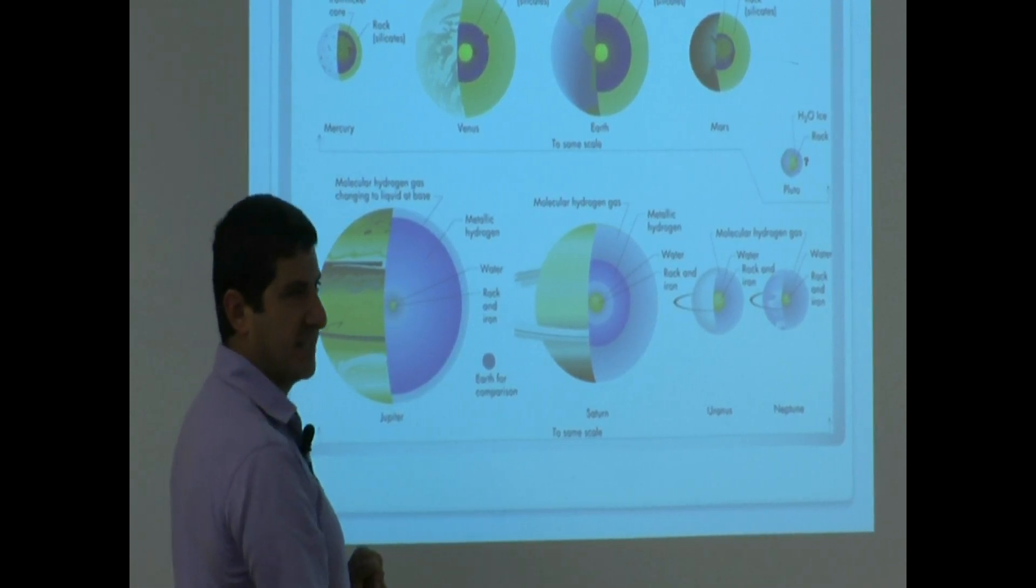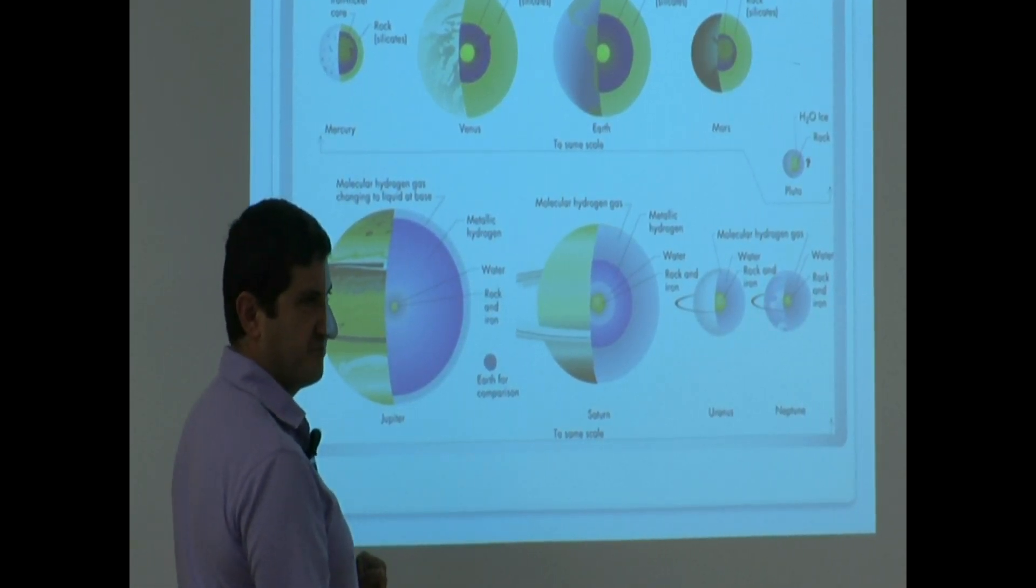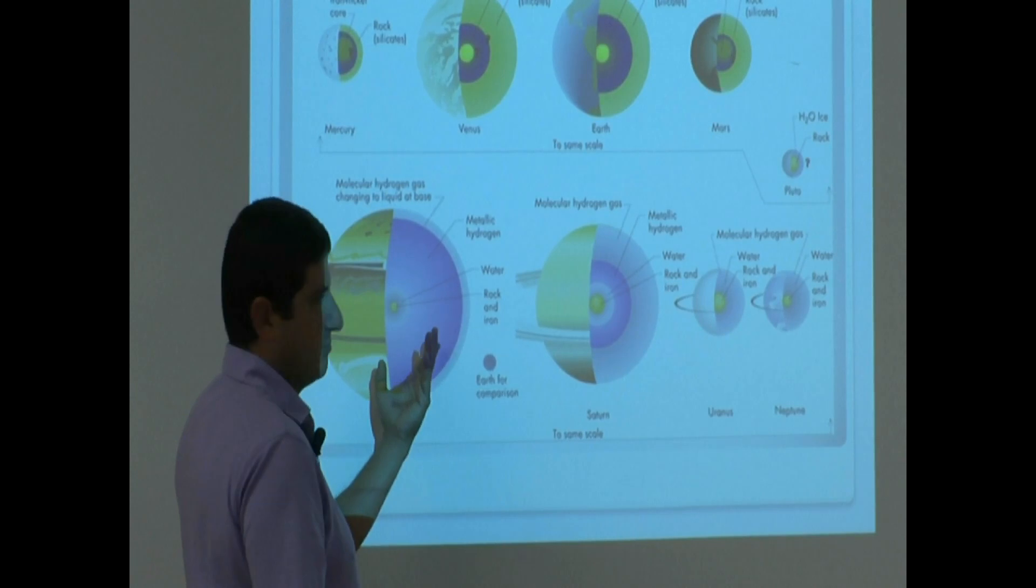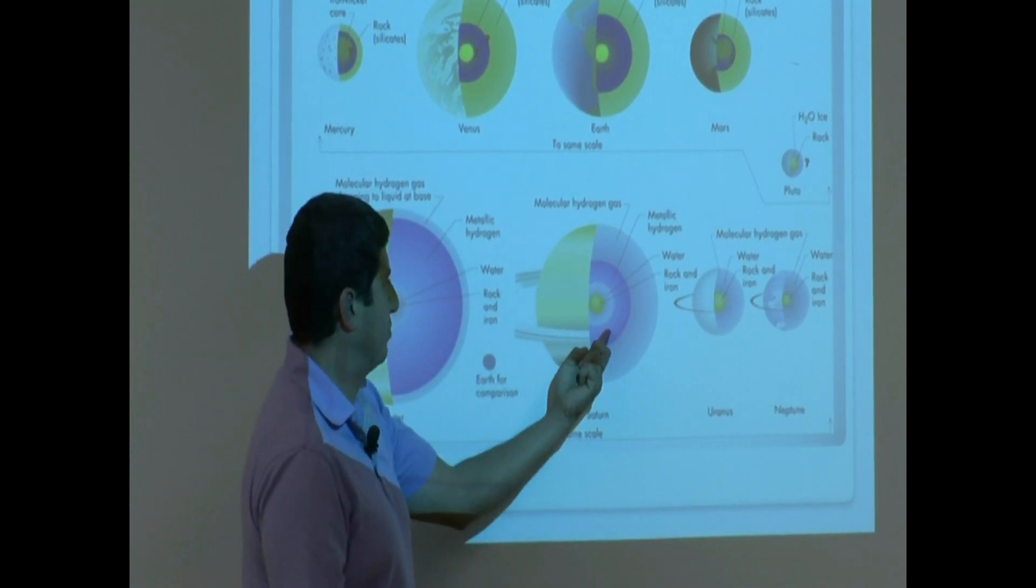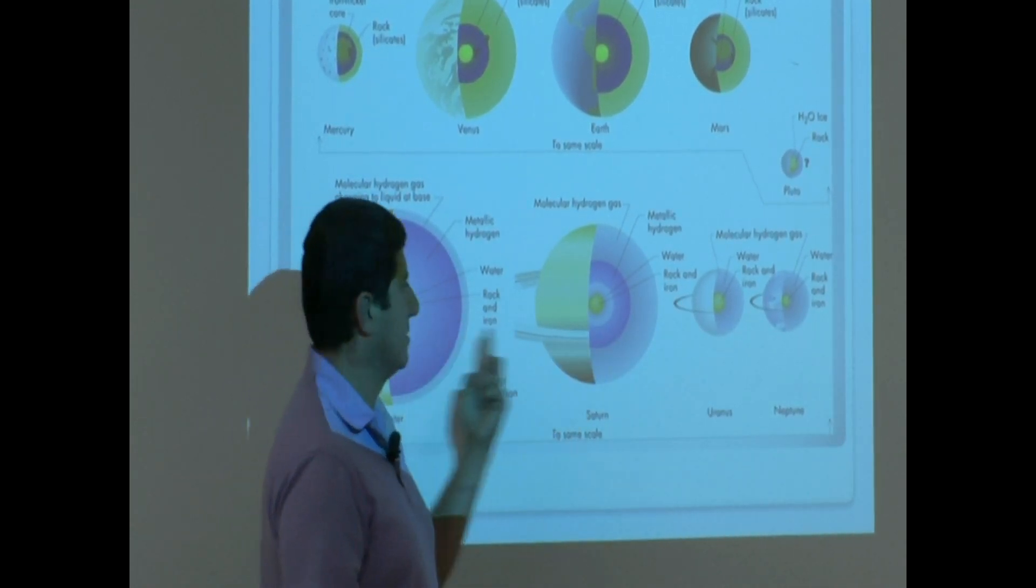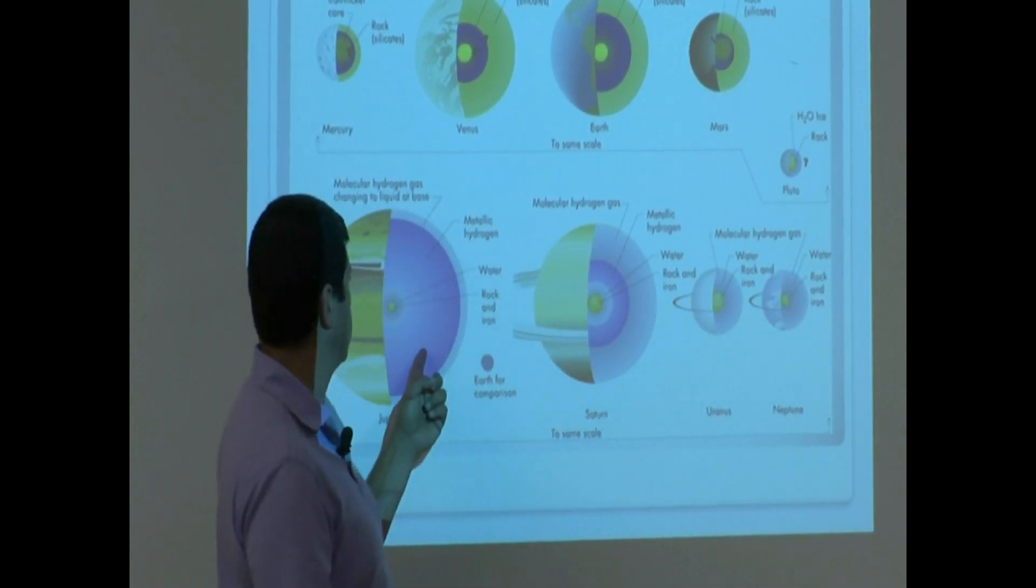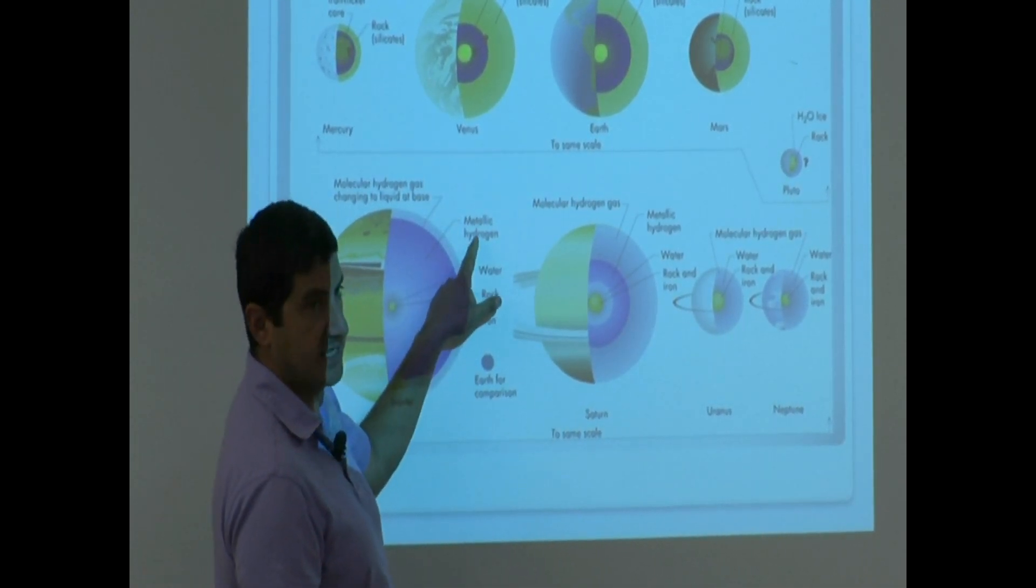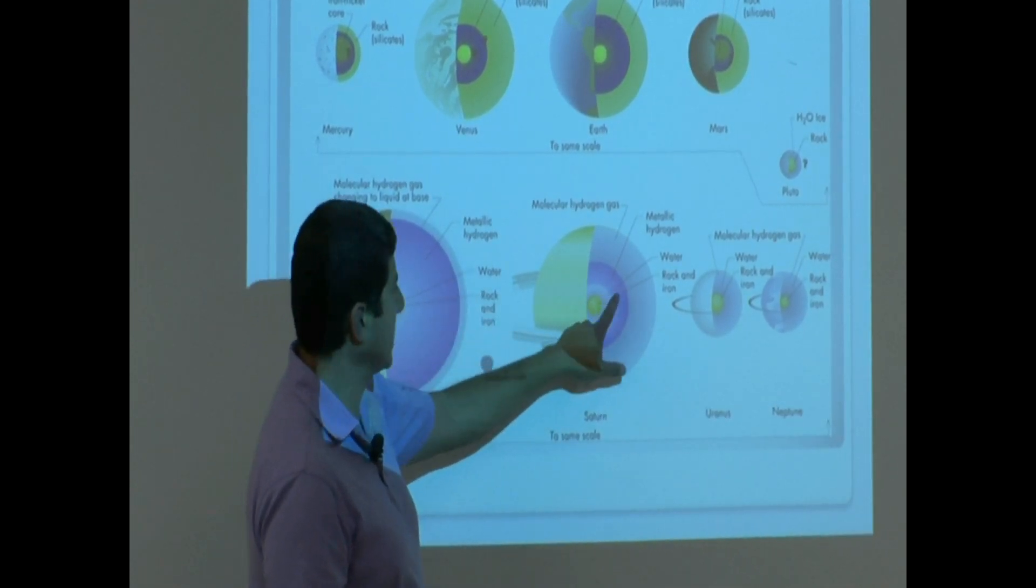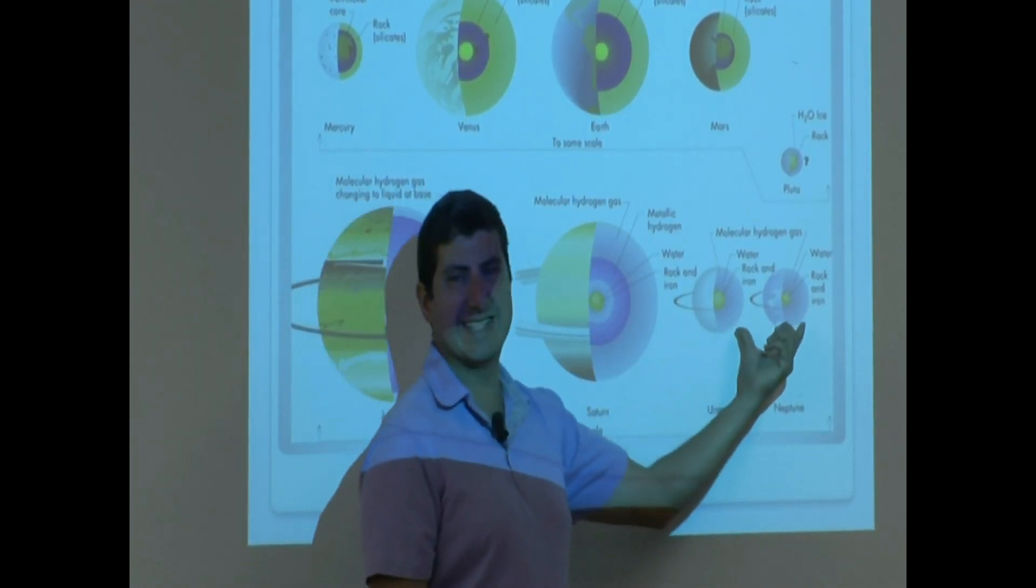What layer is it missing? Look at the color. You see the blue, the purple? It's missing that layer, right? What's the purple layer? The metallic hydrogen. Metallic hydrogen. It doesn't exist in these two.